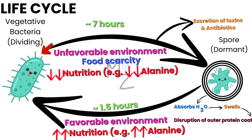Life cycle: this is the normal vegetative bacteria in its dividing state. When the environment is unfavorable — like food scarcity, less nutrition, for example less alanine — bacteria will be converted into their dormant resistant state, that is the spore. During that conversion, bacteria also excrete certain toxins and antibiotics, and this conversion takes approximately 7 hours. When conditions are favorable, the spore will be converted back into bacteria. It will absorb water, swell, and disruption of the outer protein coat will occur. This conversion takes approximately 1.5 hours and takes place in a favorable environment with good nutrition, for example a good amount of alanine.